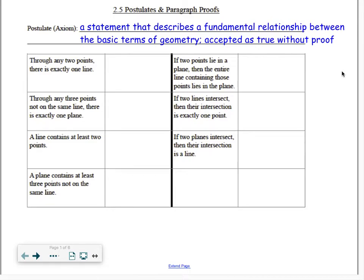For example, we talked about the first one that says through any two points, there is exactly only one line. We also talked about the second postulate. Through any three points that are not on the same line, that are non-collinear, there's only one possible plane that contains all three of those points.